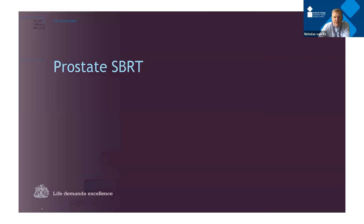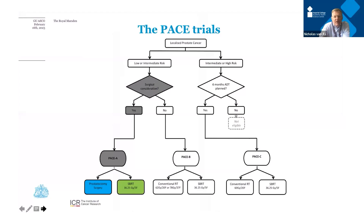My main area is prostate cancer, and I'll show you some studies of prostate SBRT. The PACE trial organogram shows: patients with low or intermediate risk prostate cancer choosing between radical prostatectomy or radiation. Those opting for surgery could randomize between surgery or SBRT — five fractions of stereotactic radiotherapy. Those going the conventional radiotherapy route were randomized between four weeks of radiation and five fractions. A similar study in higher-risk patients, PACE-C, won't be discussed further today.